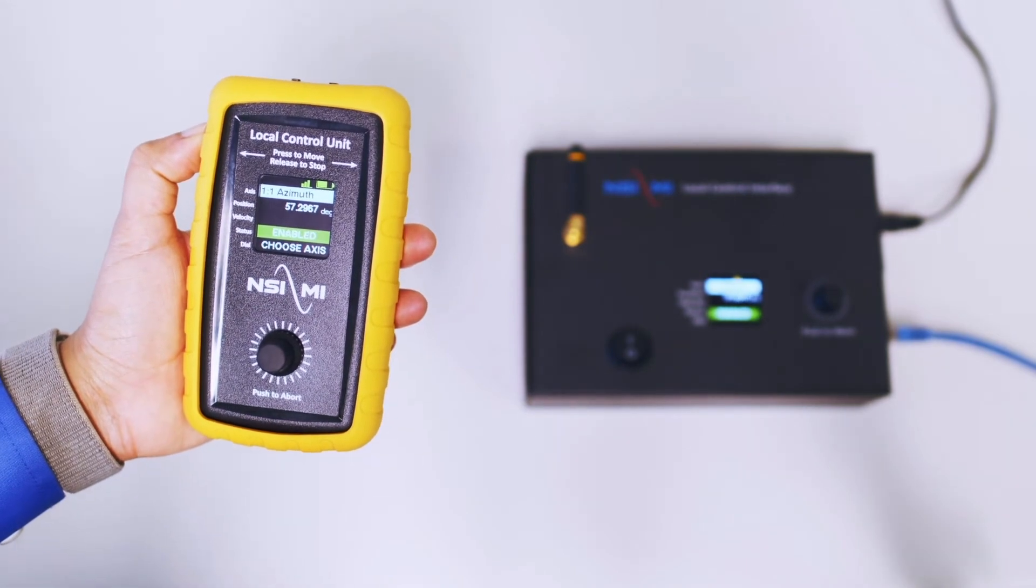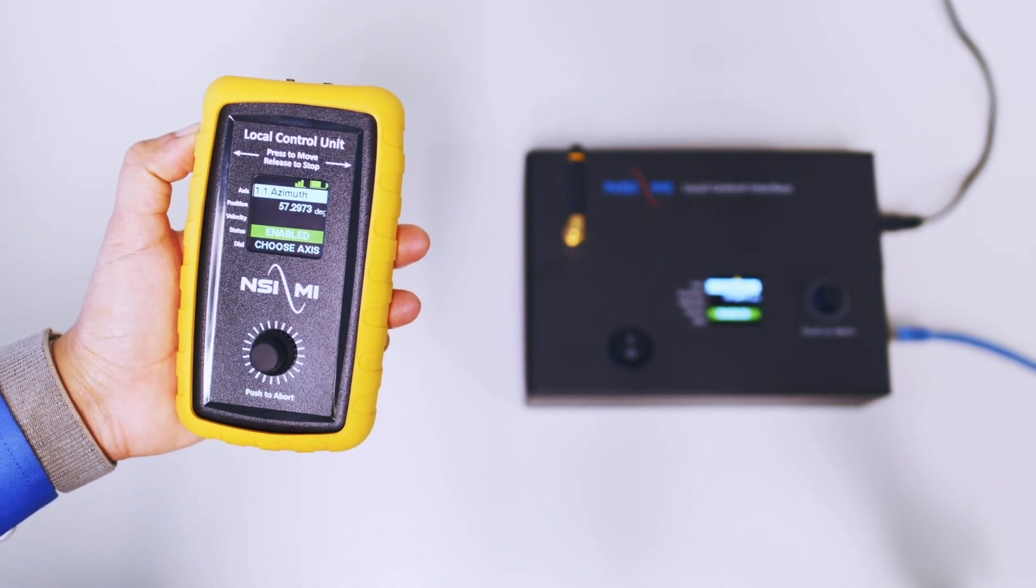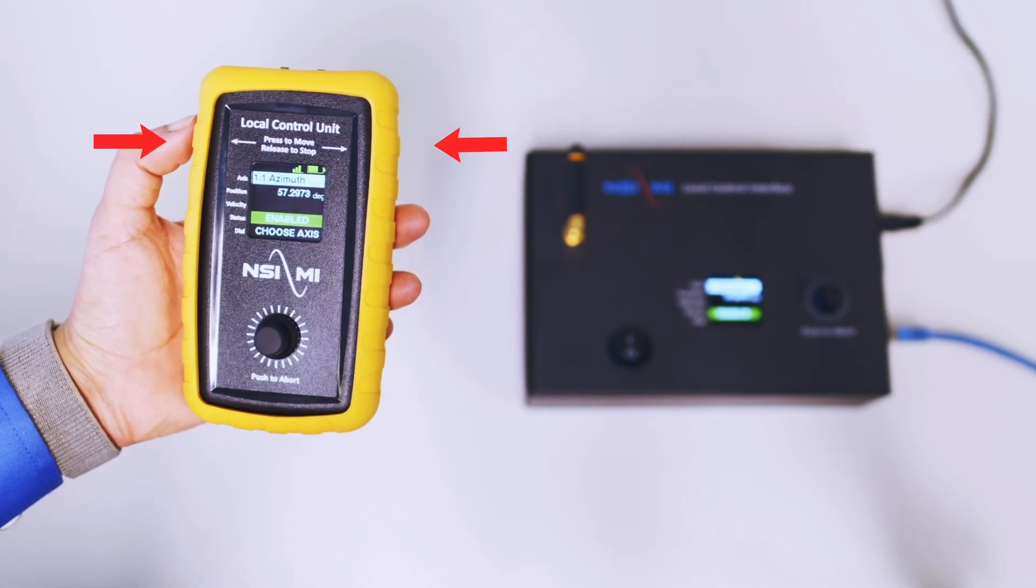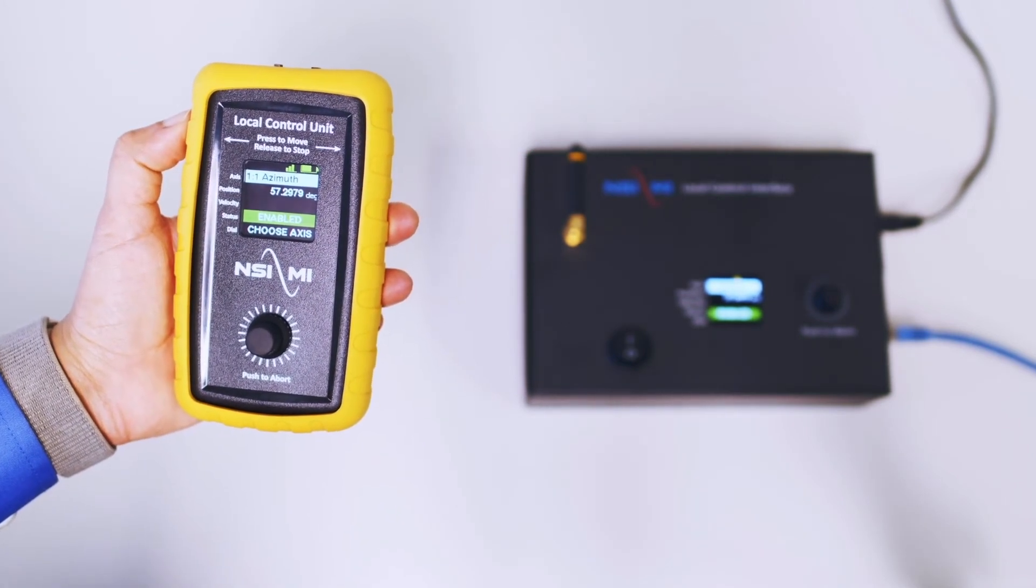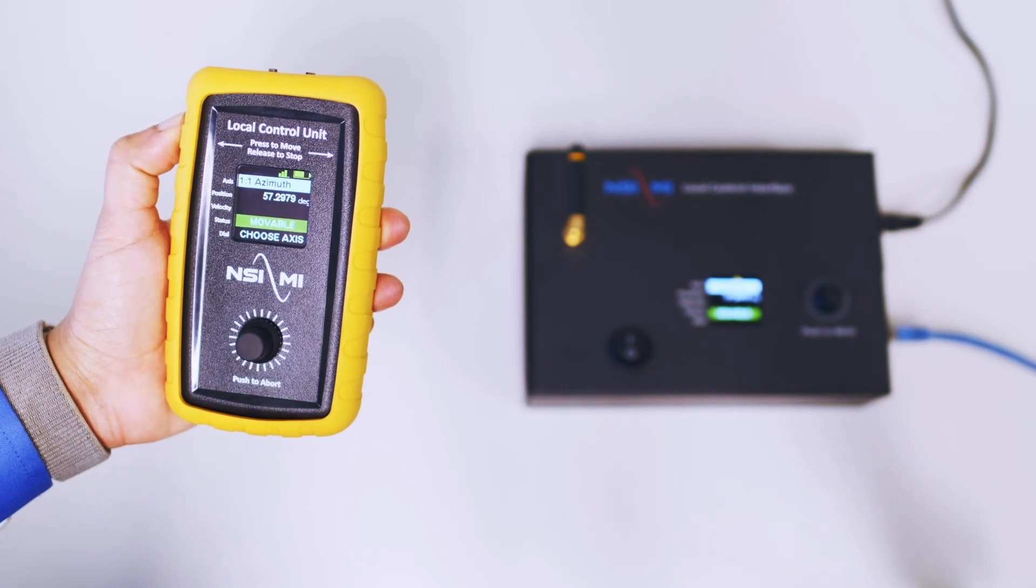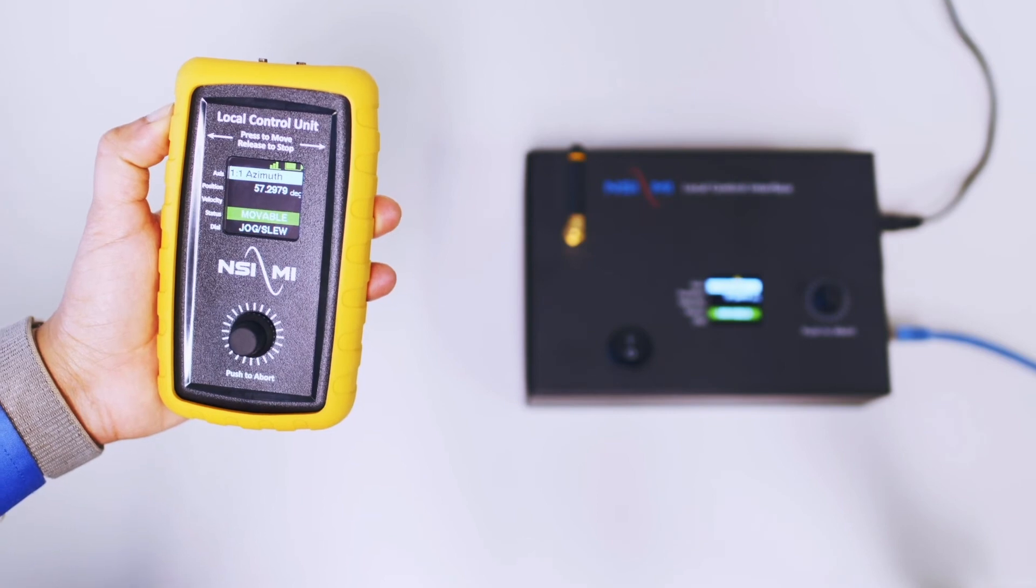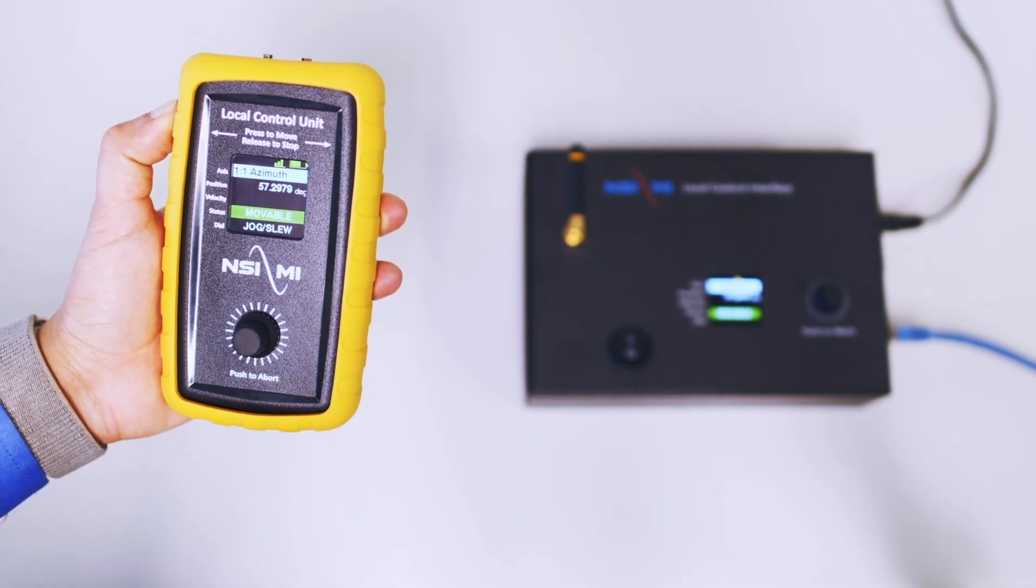Once the desired access is selected, the next step is to enable the access. Either one of the LCU side switches can be pressed and held to enable the access. In this state, the status of the current access changes to movable and it's now ready to initiate a motion.